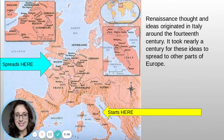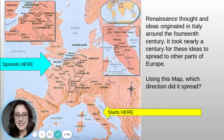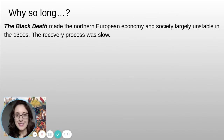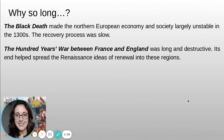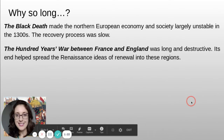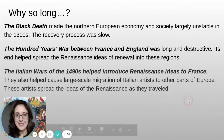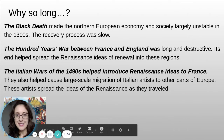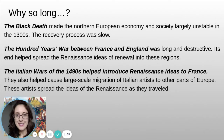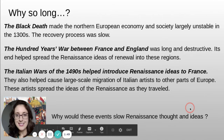Renaissance thought and ideas originated in Italy around the 14th century. It took nearly a century for those ideas to spread to other parts of Europe. Using this map, which direction did it spread? Why so long? The Black Death made Northern European economy and society largely unstable in the 1300s, and the recovery process was slow. The Hundred Years' War between France and England was long and destructive. The end of it helped spread Renaissance ideas of renewal into these regions. The Italian Wars of the 1490s helped introduce Renaissance ideas to France and caused large-scale migration of Italian artists to other parts of Europe, spreading Renaissance ideas as they traveled.